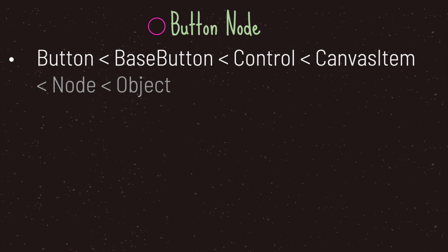The button node is basically the button class — it has its own sets of properties and methods. The button class inherits from the base button class, which inherits from the control class, meaning the button class is in fact a UI element. The control class also inherits from the canvas item class, and importantly the button does inherit from the node class, which means we get the basic script life cycles on top of additional life cycles given to us by the button class.